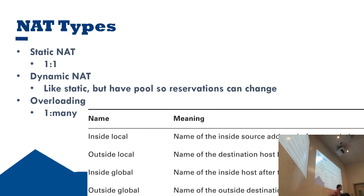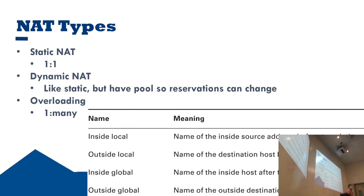The third and most common type is overloading — also called PAT — where one public IP address is shared by many different private IP addresses. Make sure you understand these NAT terms: inside local is the inside source address before translation; outside local is the destination host before translation; inside global is the inside host after translation; and outside global is the name of the outside destination host after translation. I'll probably ask test questions about those types.